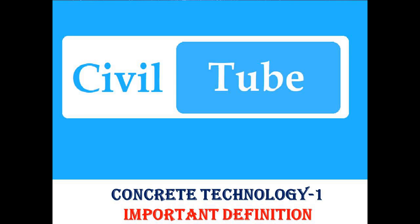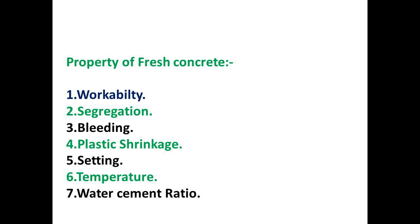Hello friends, if you are watching CivilTube. In this video we will talk about some definitions. First one is workability, second is segregation, third one is bleeding, fourth one is plastic shrinkage, fifth one is setting, sixth one is temperature, and seventh one is water cement ratio. These are the properties of fresh concrete.